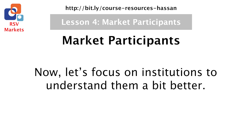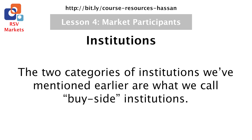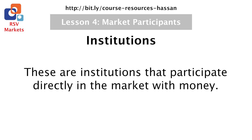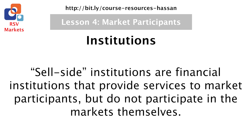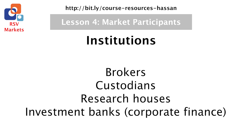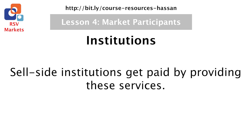Now let's focus on institutions to understand them a bit better. The two categories of institutions we've mentioned earlier are what we call buy side institutions. These are institutions that participate directly in the market with money. Sell side institutions are financial institutions that provide services to market participants but do not participate in the markets themselves. Some examples of sell side institutions include brokers, custodians, research houses, and investment banks offering corporate finance services. Sell side institutions get paid by providing these services.